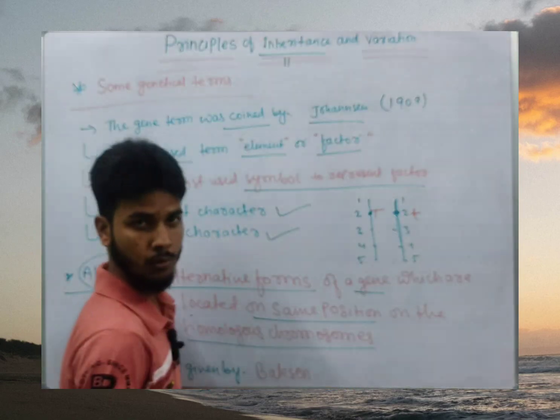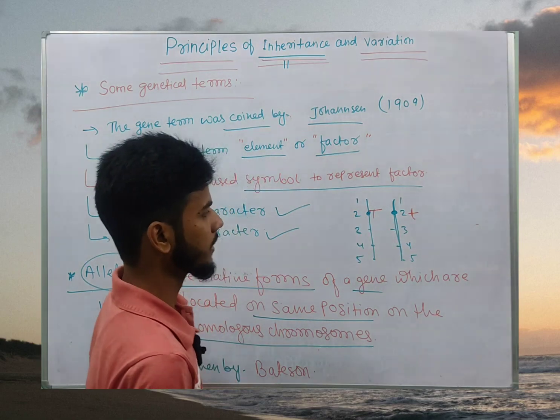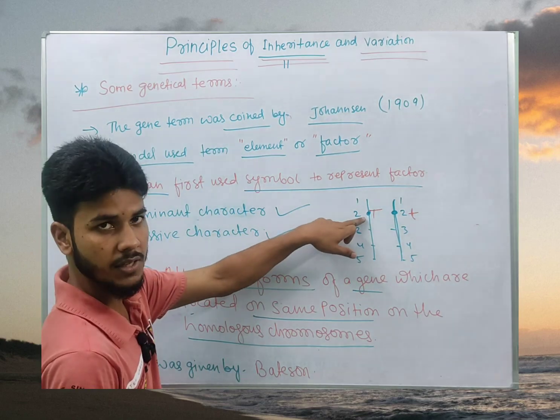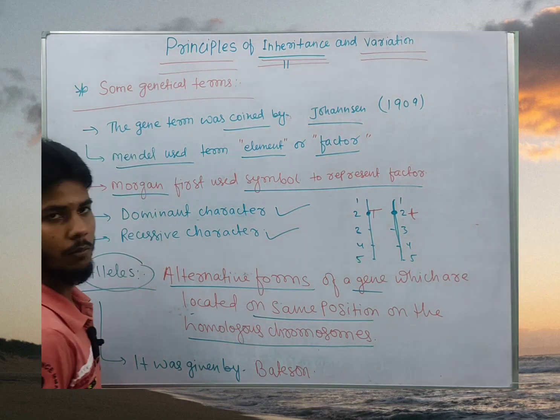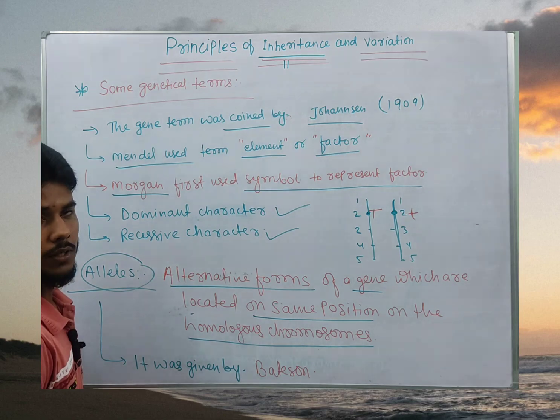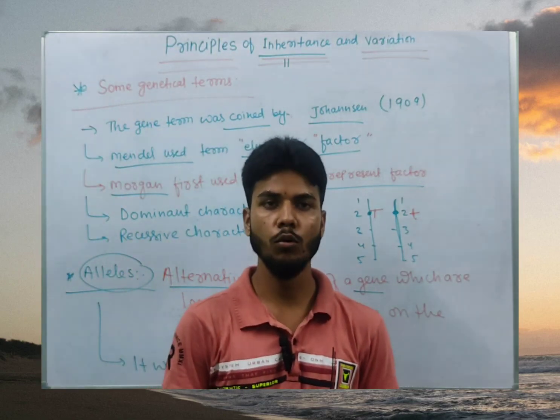These are the homologous chromosome. Yeh position is same. Same locus or the same position that is basically genes present hai, which is a form. It's a form, capital T, small T, it's a form. We will say aliens. Once again genes are a form. We will say aliens.